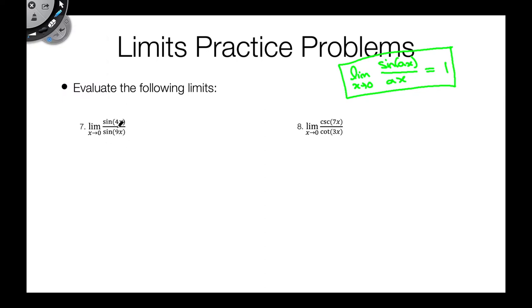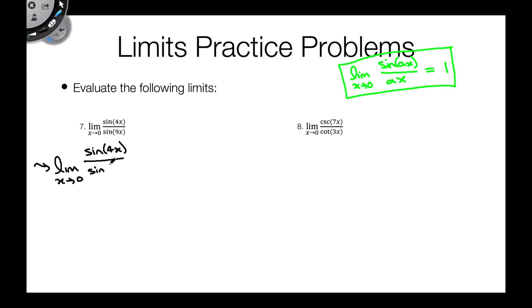For this first problem, we have the limit as x approaches zero of sine of 4x over sine of 9x. This doesn't quite match our identity. However, we might be able to make it match. For example, if we consider the sine of 4x up here, it would be really nice if we had a 4x in the denominator, because then we could apply our identity.